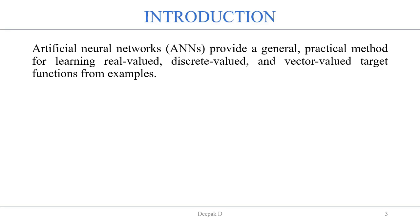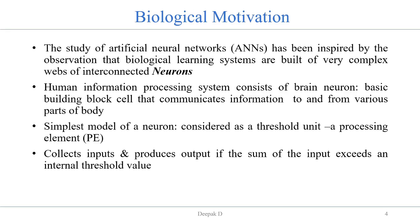It is like an artificial human nervous system for receiving, processing and transmitting information. In terms of computer science, artificial neural networks provide a general, practical method for learning real-valued, discrete-valued, and vector-valued target functions from examples.